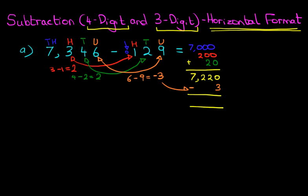I just want you to concentrate on the 20. 20 minus 3. The answer becomes 7200 and 20 minus 3 is 17. And that is our answer. 7346 minus 129 is 7217.